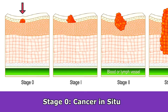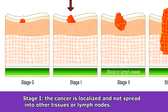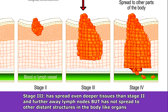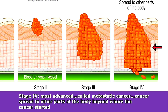Stage zero is cancer in situ — the cancer is still in its original place and hasn't invaded surrounding tissues. Stage one means the cancer is localized and has not spread into other tissues or lymph nodes. Stage two means the cancer has spread into surrounding tissues and nearby lymph nodes. Stage three means the cancer has spread into even deeper tissues and further away lymph nodes, but has not spread to other distant structures like organs. Stage four is the most advanced — called metastatic cancer — meaning the cancer has spread to other parts of the body beyond where it started.